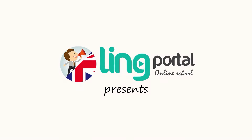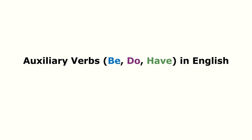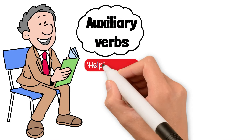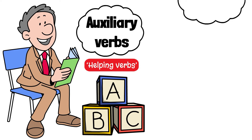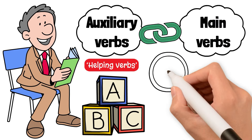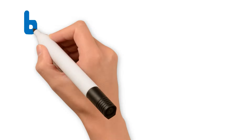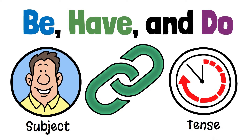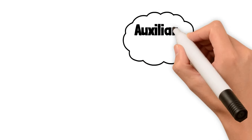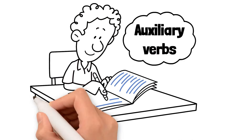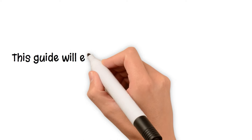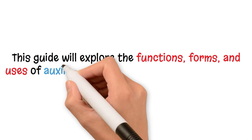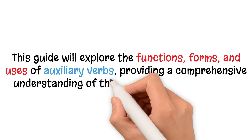Ling Portal Online School presents: Auxiliary Verbs Be, Do, Have in English — an English Grammar Lesson. Auxiliary verbs, often referred to as helping verbs, play a crucial role in English grammar. They work alongside main verbs to form various tenses, moods and voices in sentences. The primary auxiliary verbs in English are Be, Have and Do. This guide will explore the functions, forms and uses of auxiliary verbs, providing a comprehensive understanding of their role in English grammar.